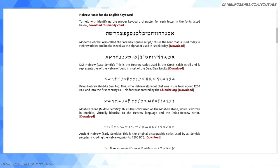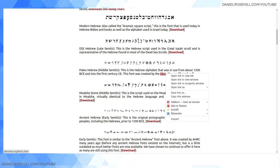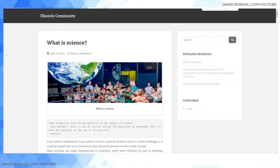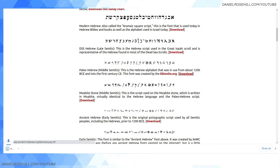Let me jump to Jeff Benner's site. I like this because he gives you a little preview of each font and then you can download it. The one I used for my wedding, if I'm not mistaken, was 'Paleo Hebrew Middle Semitic' — this is the Hebrew alphabet that was in use from about 1200 BCE and into the first century. This font was created by ebionite.org. You can see what's here and then download it.